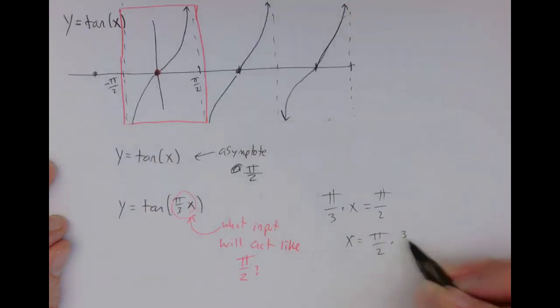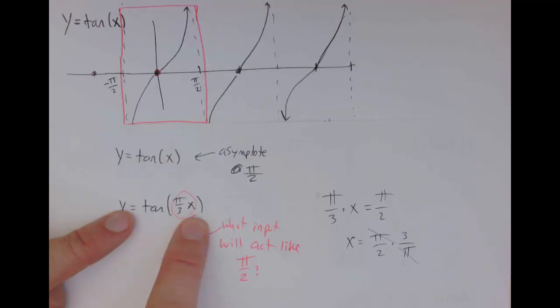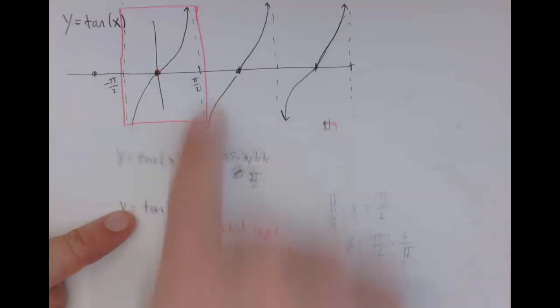So I'm undoing the process of the multiplication. So let's multiply by 3 and divide by π. I said multiply by 3, divide by π. So that gives me this. The π's divide to be 1. And so now I have x equals 3/2. So what that means is when I plug in 3/2, all the cancellation occurs, and I get π/2 as the input to tangent. So that means when x is 3/2, that's where my vertical asymptote is going to show up.